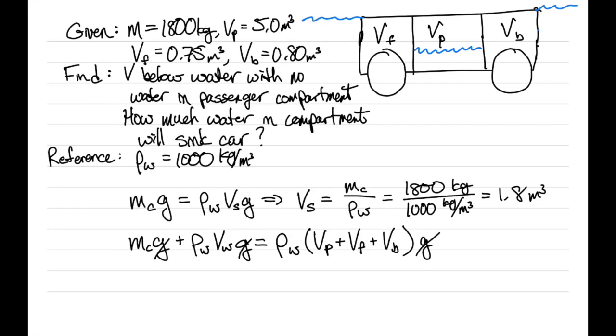If we divide through by density of water, we see that the volume of water is simply the volume of the passenger compartment plus the volume of the front plus the volume of the back of the car—so the total volume of the car minus the mass of the car divided by the density of water.